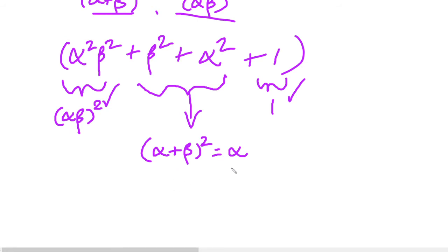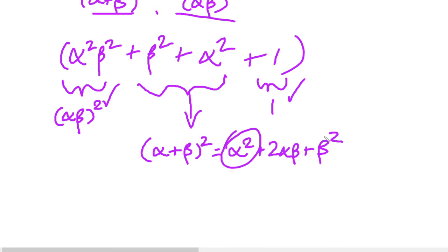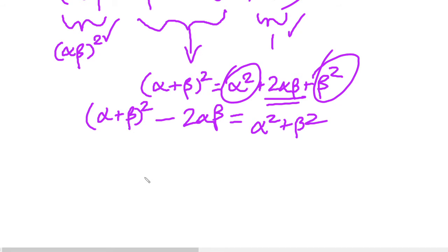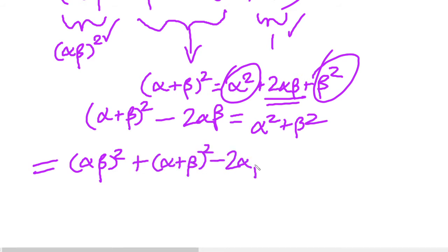Now that you've unpaused: (α + β)² = α² + 2αβ + β². So, rearranging, (α + β)² − 2αβ = α² + β². We rewrite the original expression as: (αβ)² + (α + β)² − 2αβ + 1.